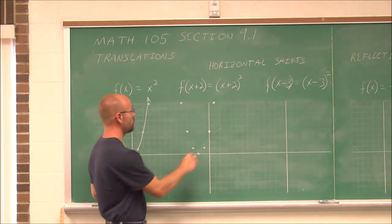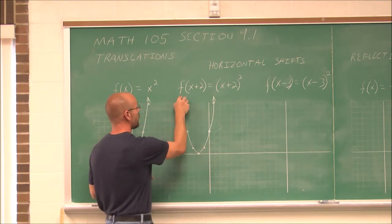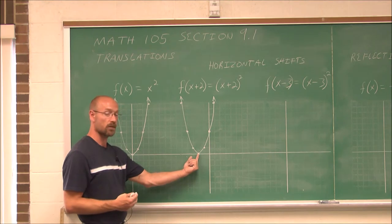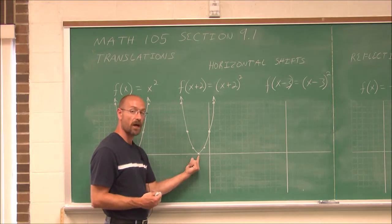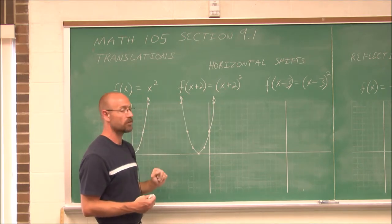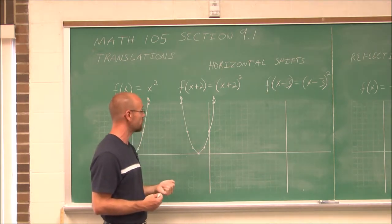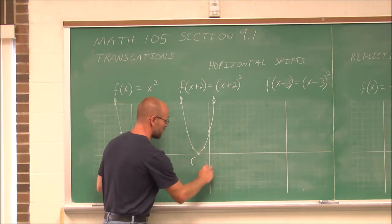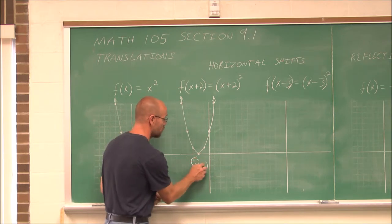We can see that exact same U shape. Comparing these two graphs, the only difference is where the vertex is located. Instead of being at (0, 0) like in our library function, it shifted two spots to the left. By adding 2 to the x value, all inputs were shifted to the left two spots — the same graph, only shifted left. Its vertex is now negative 2, 0.